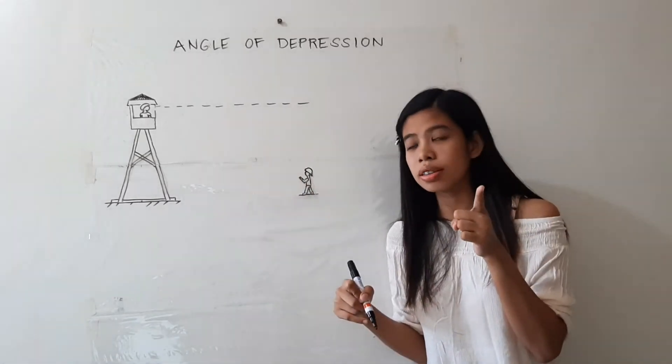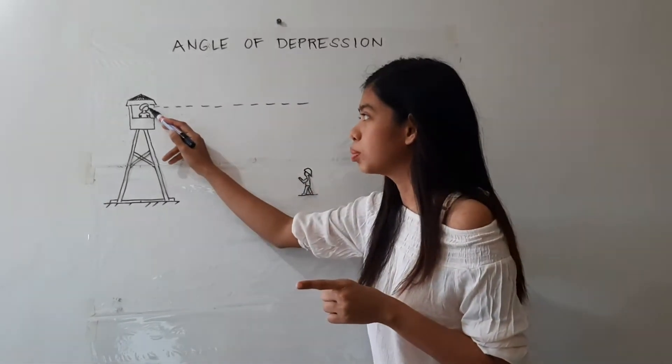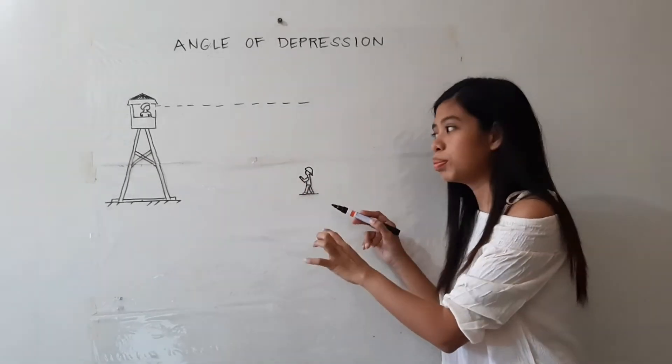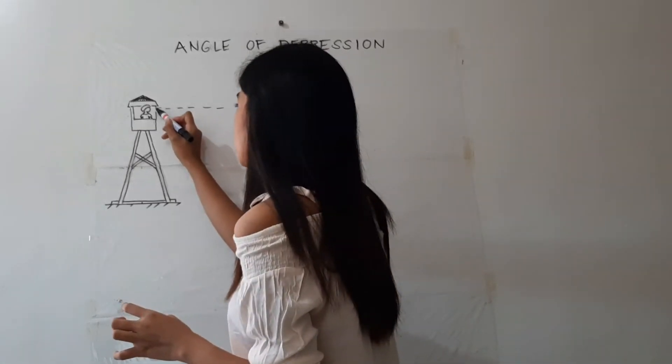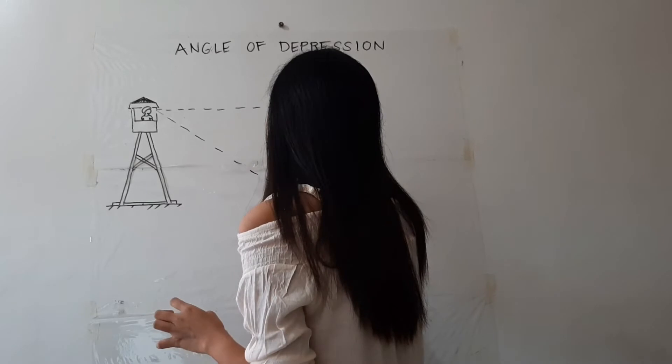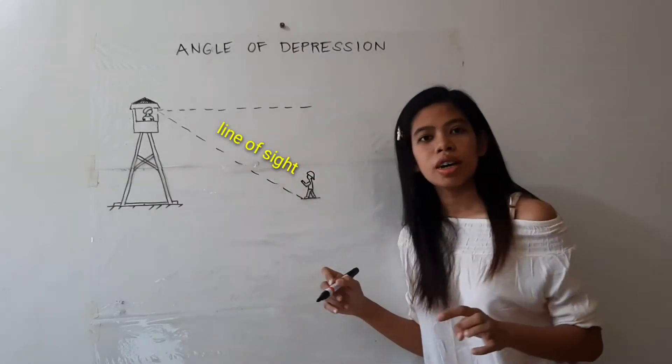And the line of sight of the observer is from the observer's eye up to the object being observed below. So it could be located here.